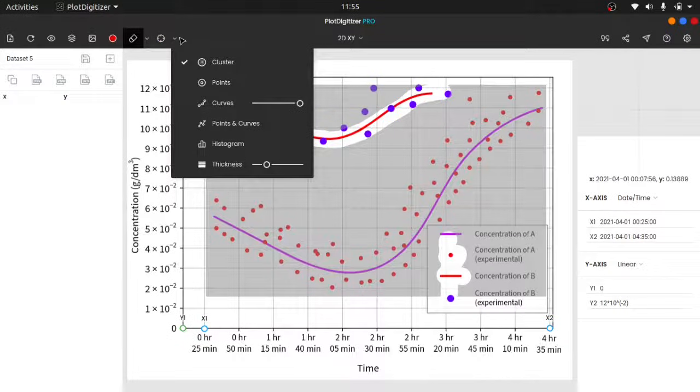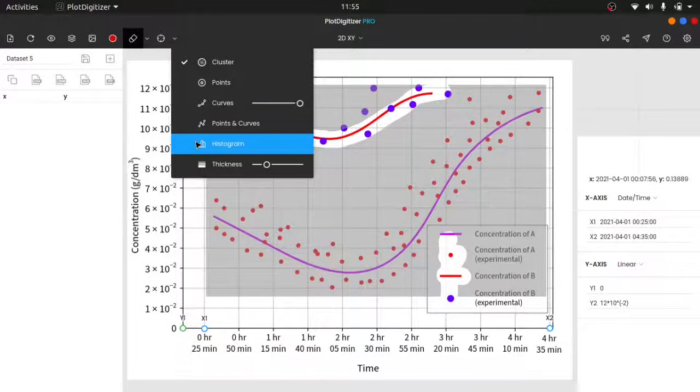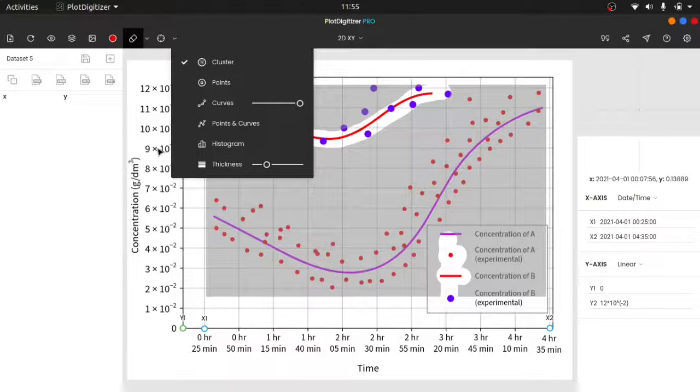Plot Digitizer is packed with several algorithms, like cluster, points, curves, histogram, etc. There are also vertical and horizontal bar algorithms which we will cover in one of the next videos. You can find more about each of these algorithms in our official documentation. Visit plotdigitizer.com/docs to know more. Since we are extracting points, we will select the point algorithm. Done. All the points are extracted.